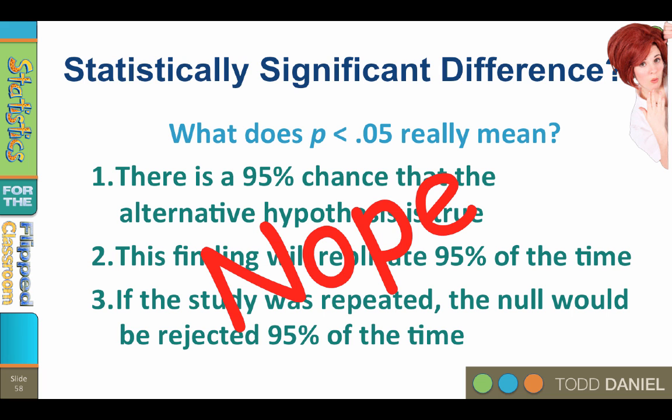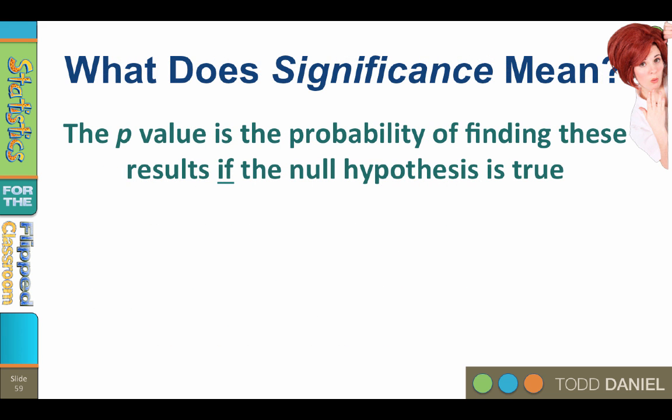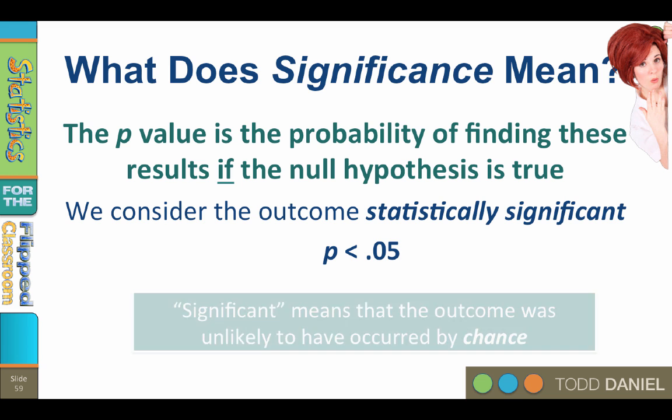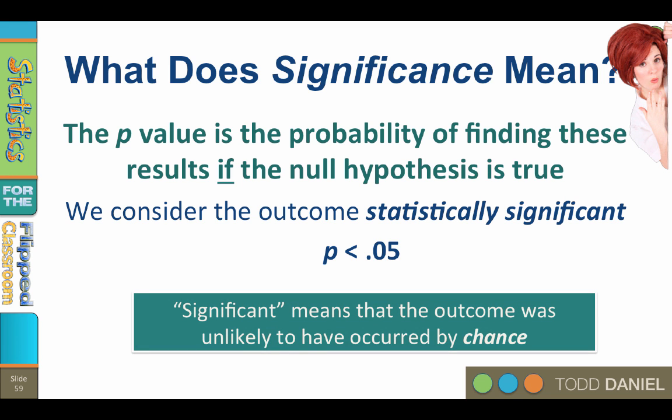So what does p less than 0.05 really mean? The p-value is the probability of finding these results if the null hypothesis is true. A statistically significant difference, p less than 0.05, means that the outcome that we observed was unlikely to have occurred by chance.